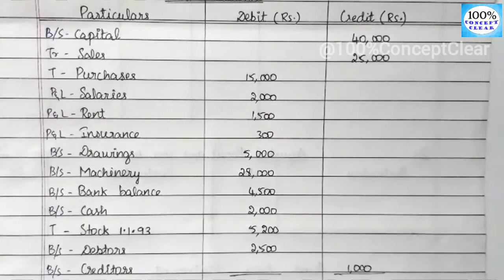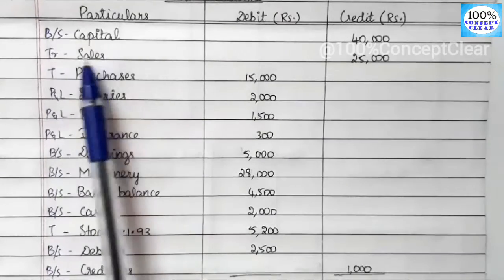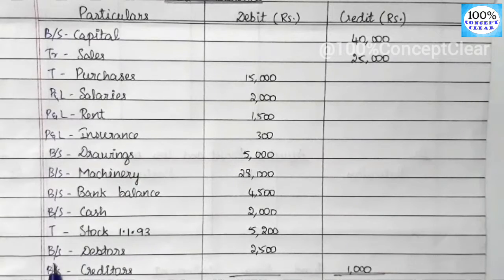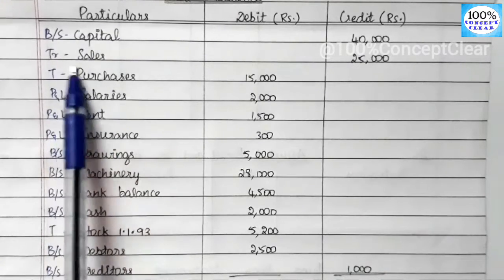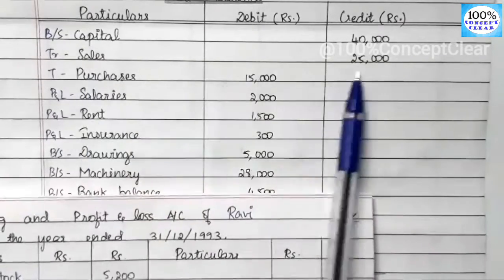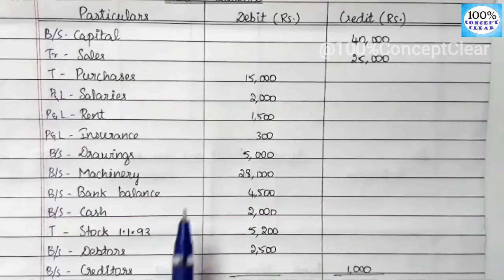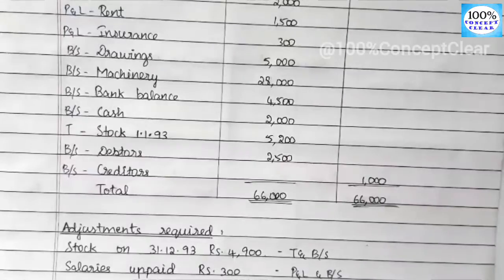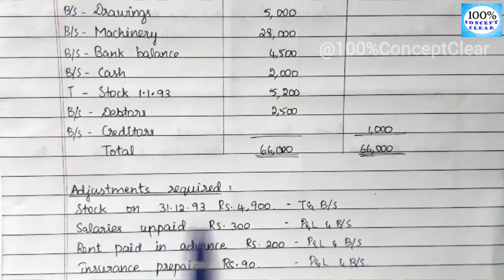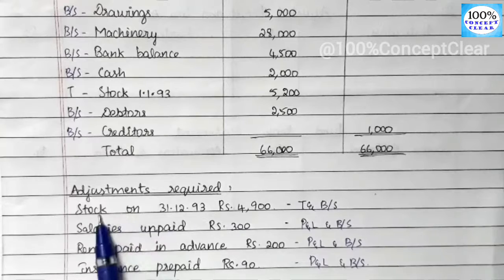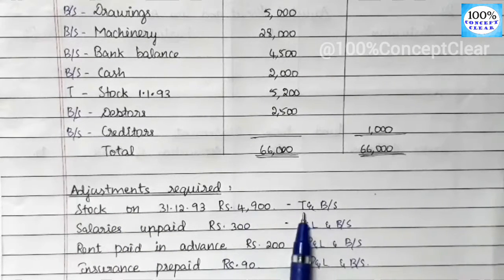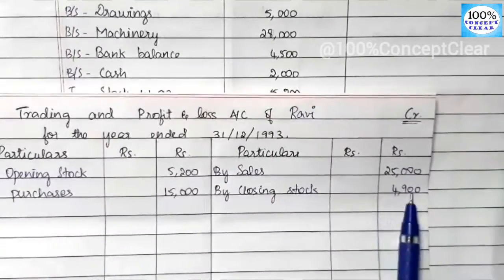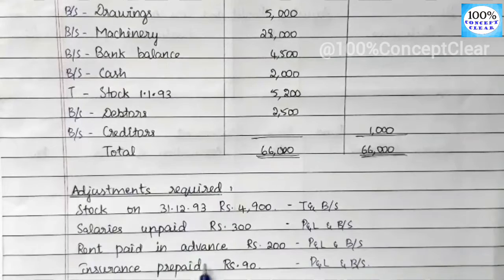On the credit side of the trading account we have Sales. Sales is a credit item — the sales amount is 25,000. We don't have a sales returns amount. Now from adjustments we have Closing Stock dated 31/12/93 — this is the closing stock of 4,900. We note closing stock in the trading account and also in the balance sheet. So we note both trial balance and adjustment items in the trading account.